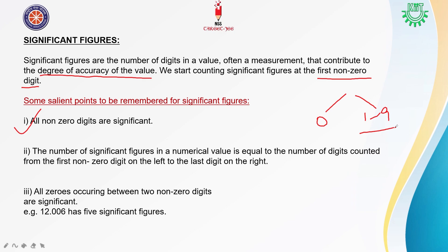Second point: the number of Significant Figures in a numerical value is equal to the number of digits counted from the first non-zero digit on the left to the last digit on the right. So Significant Figures start where there is a non-zero digit.